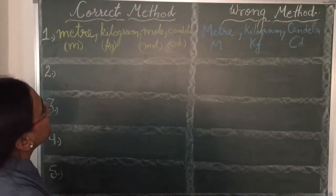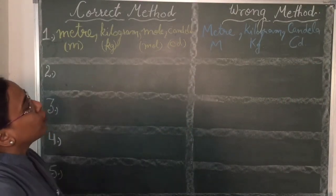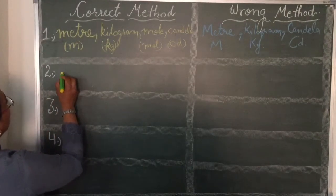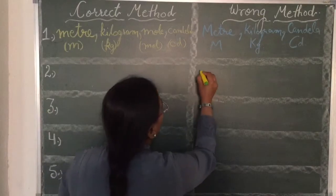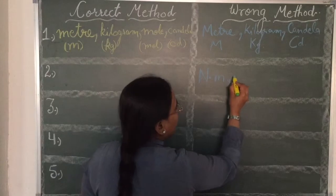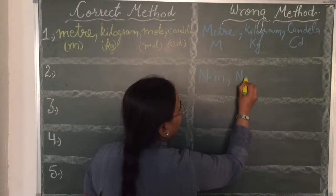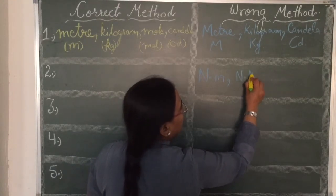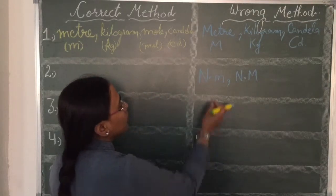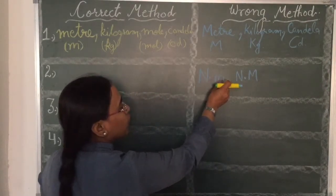Second one is the symbol should not be followed by full stop. That is Newton dot meter, it is the wrong method. Newton dot meter. We are writing nanometer, nano dot meter. So, nano is wrong, meter is also wrong here. So, dot should not be there between two units.